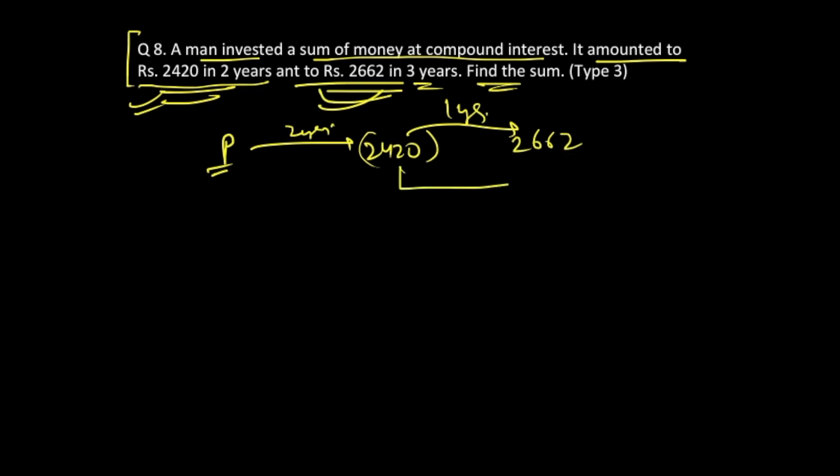So if you subtract 2420 from 2662, you're going to get your answer as 242. Right? 242 is the answer that you have gotten over here.